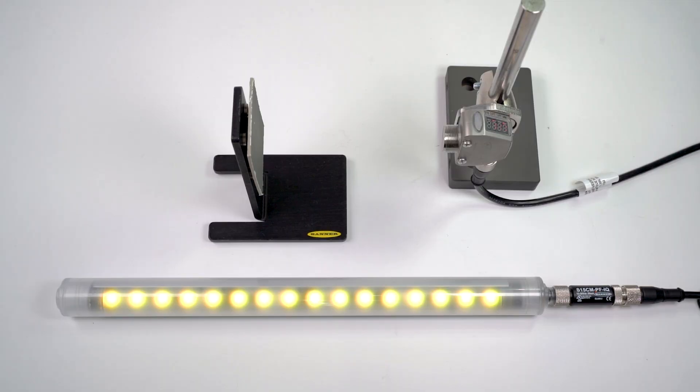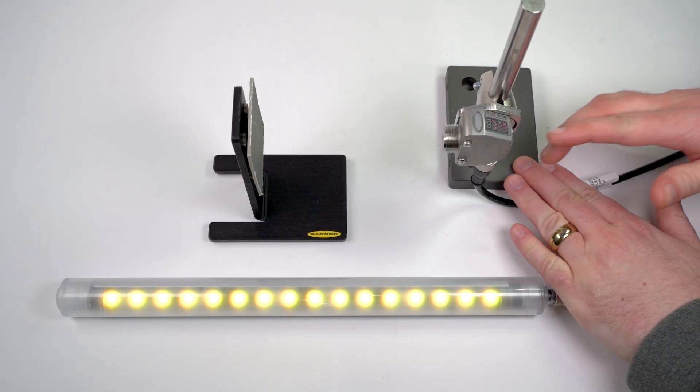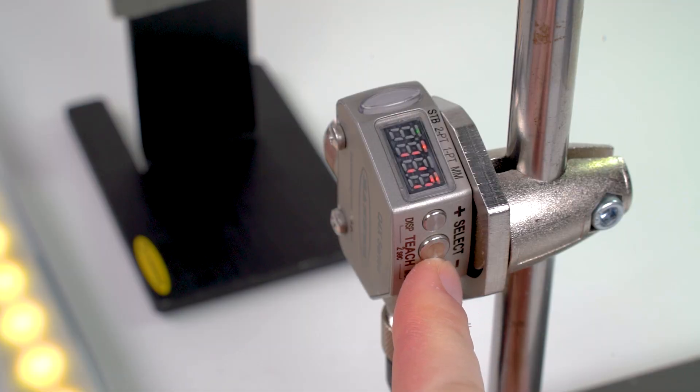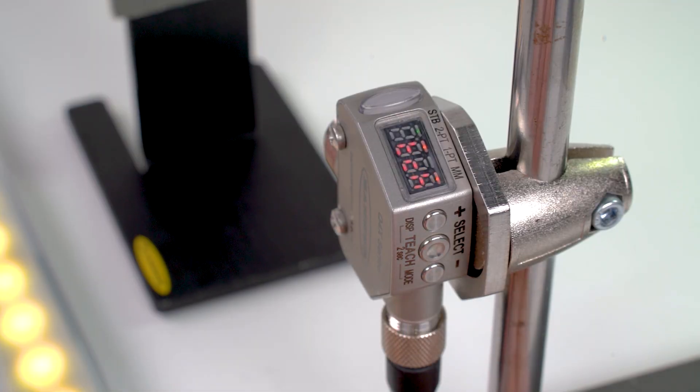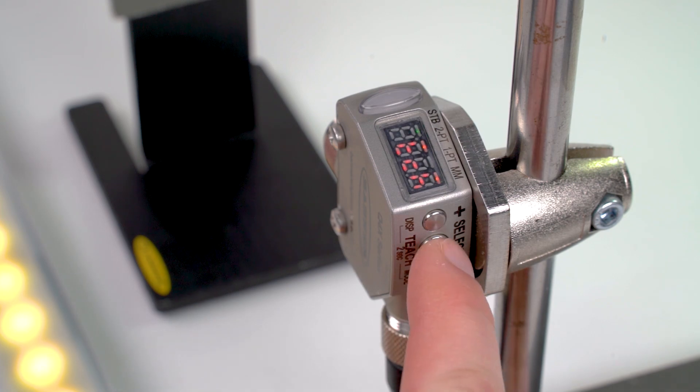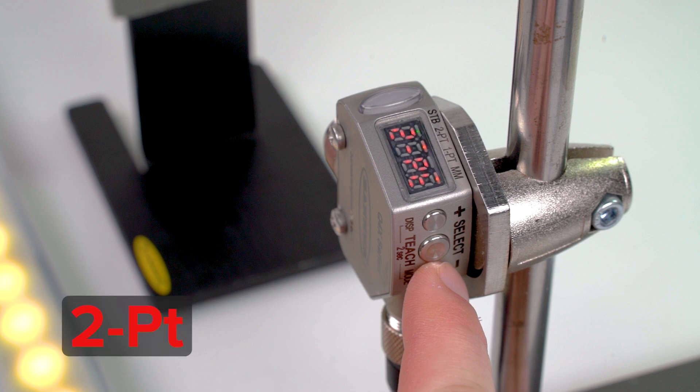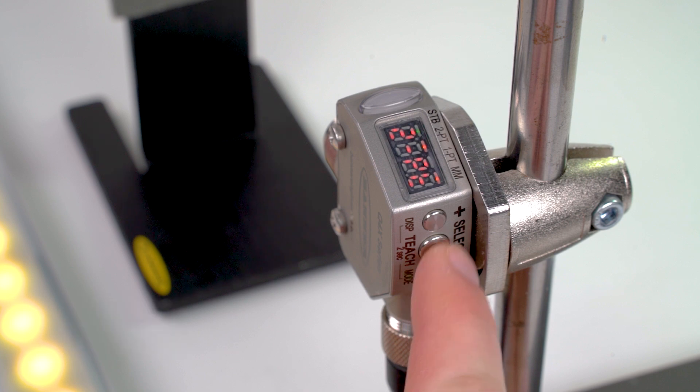The first step is to select the teach mode from the setup mode menu. Press and hold the minus or mode button for two or more seconds. The menu will show TCH. Press the select button to enter the teach selection menu and use the plus and minus buttons to navigate through the options until you see the two-point option and press the select button again.